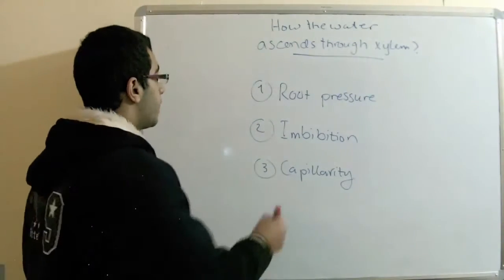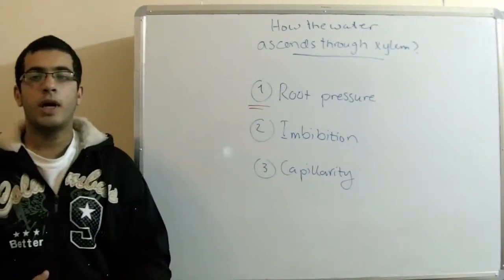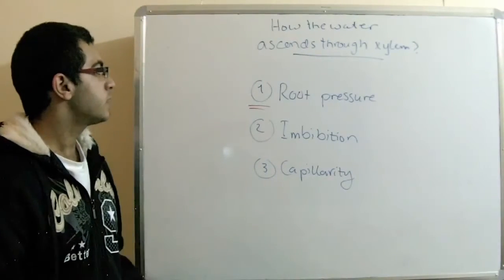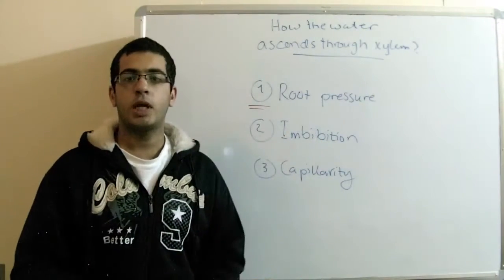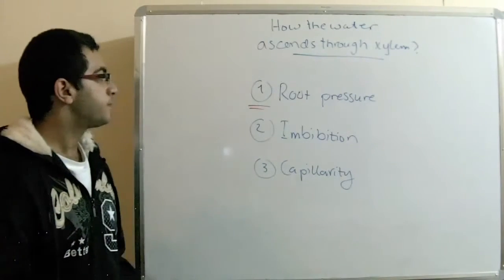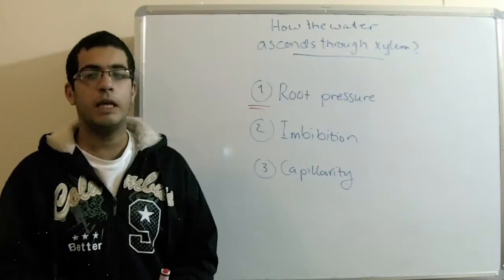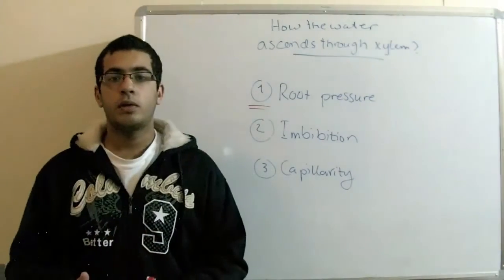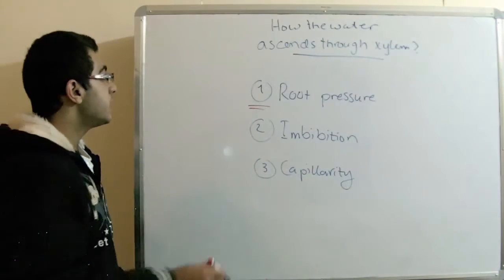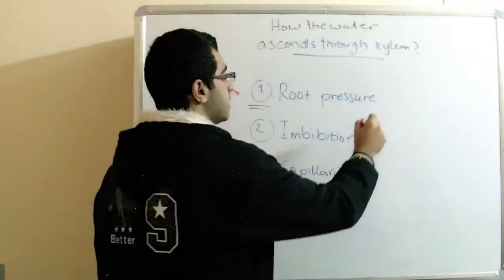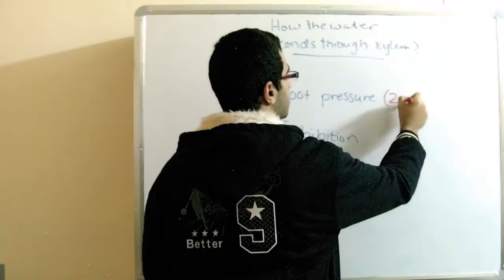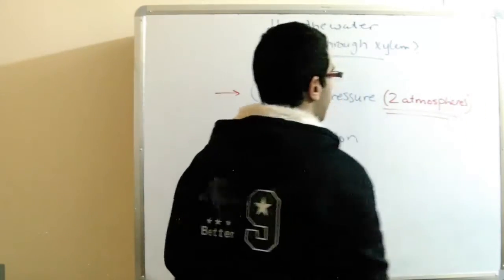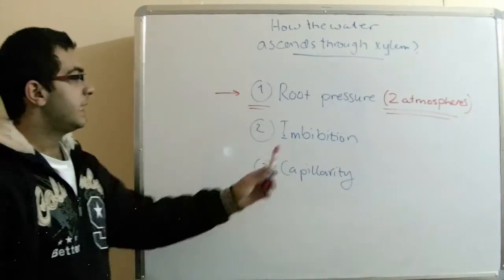The first thing is the root pressure. When the water moves from the outside medium, the soil medium, into the root hair cells, there is an osmotic pressure as we mentioned previously, which makes the water pass from the outside to the inside. So this root pressure makes a continuous column of water, but actually this root pressure is very weak as it doesn't exceed two atmospheres.